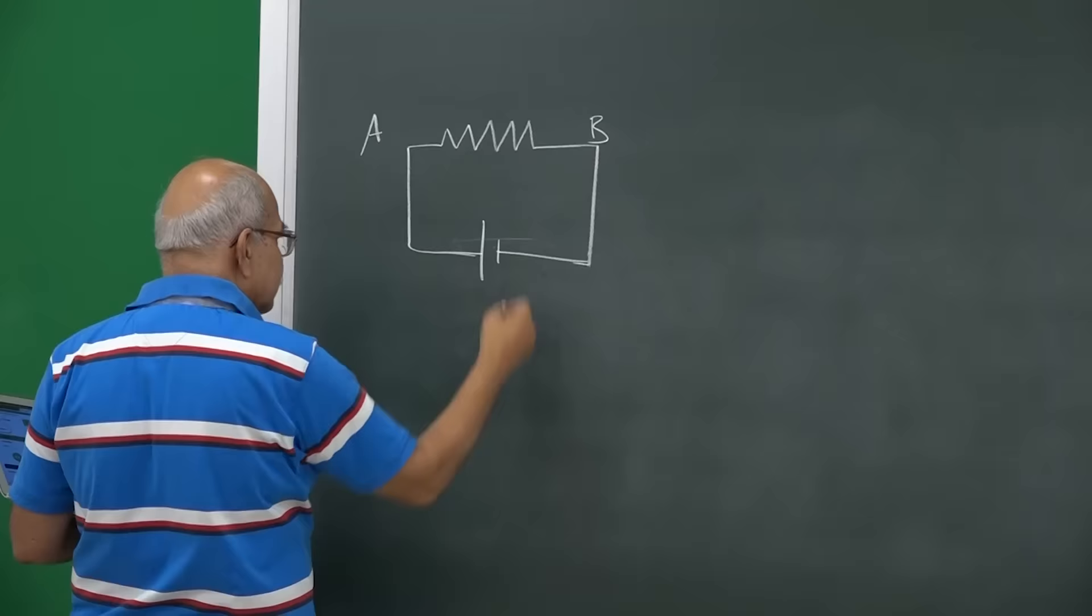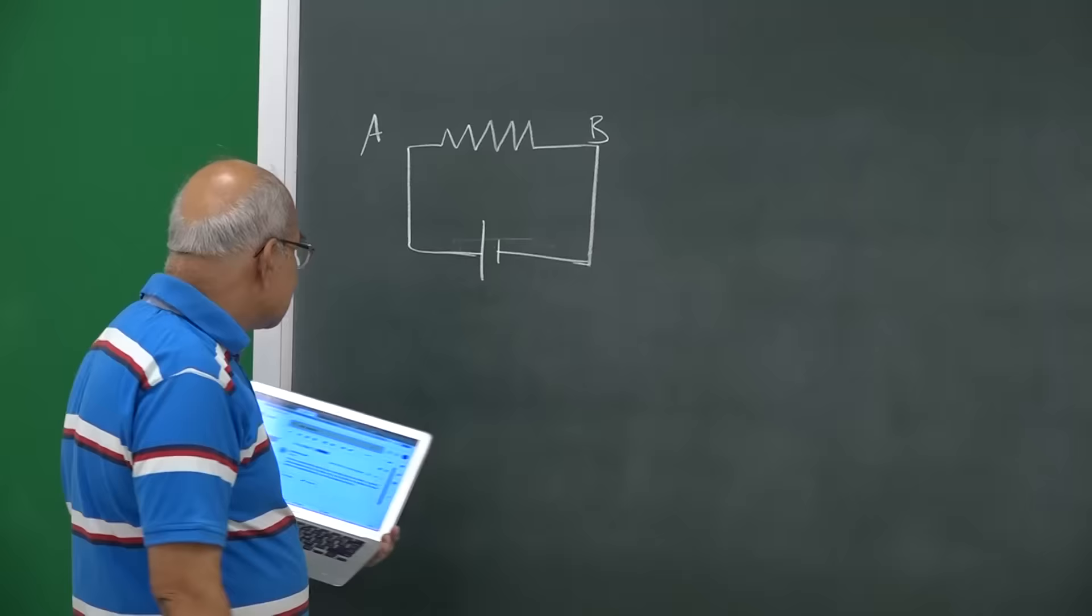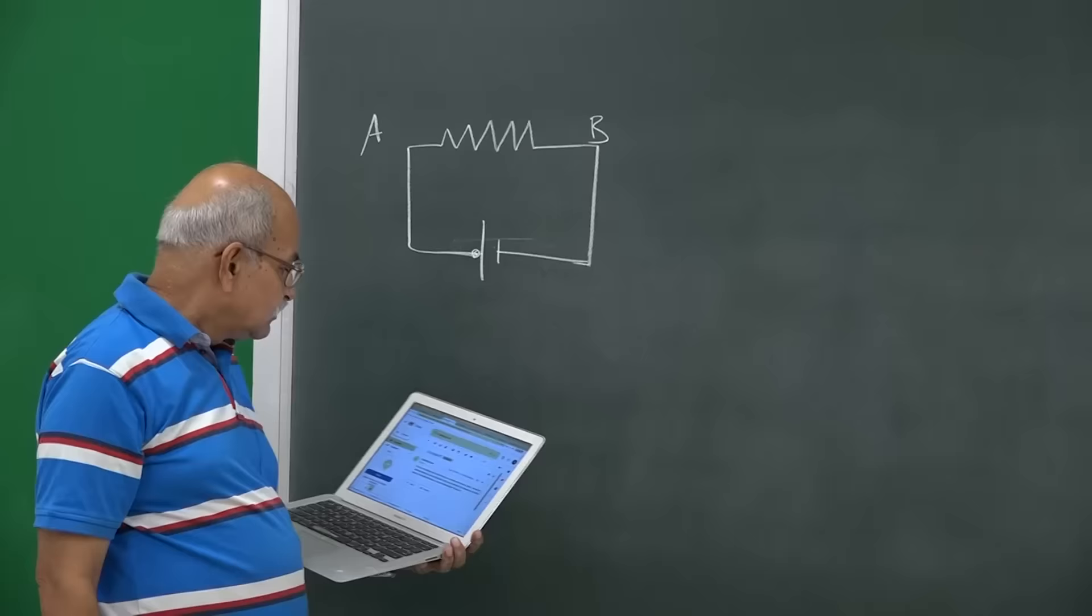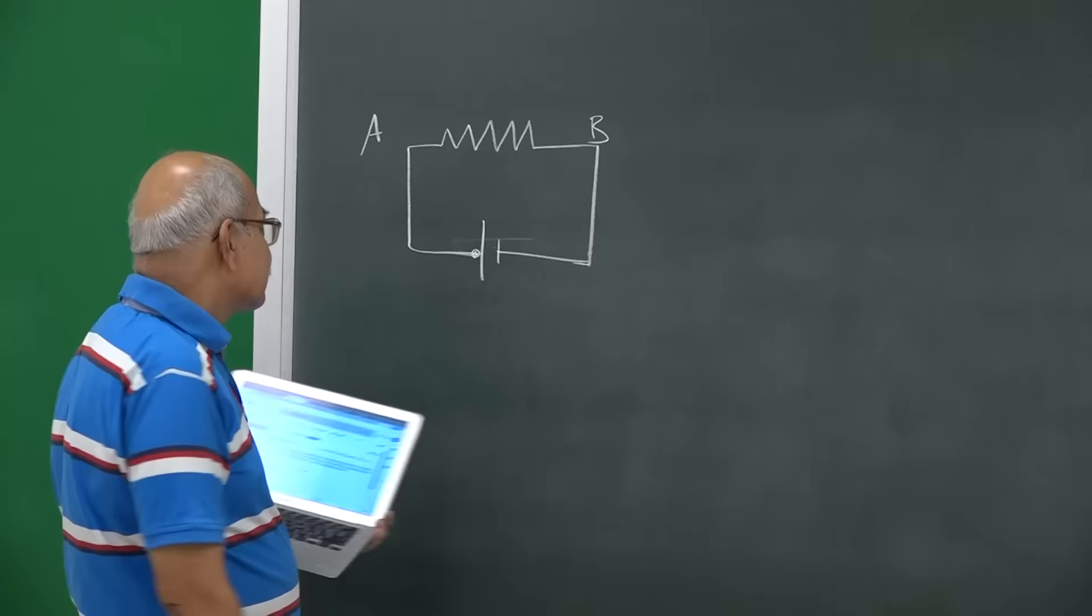The potential difference between one end of the battery, say positive, this point, potential difference between one end of the battery say plus and one end A of resistance here, this is 0.